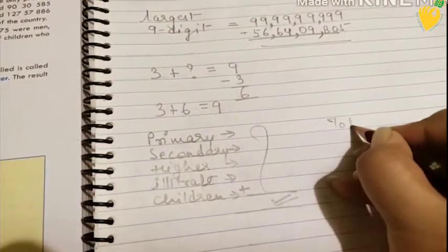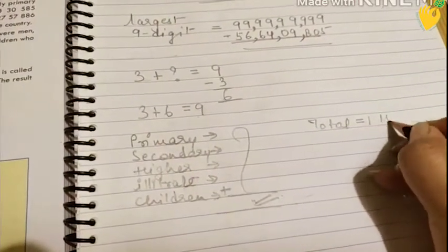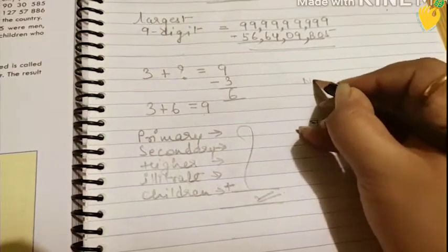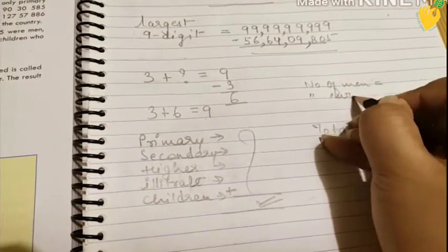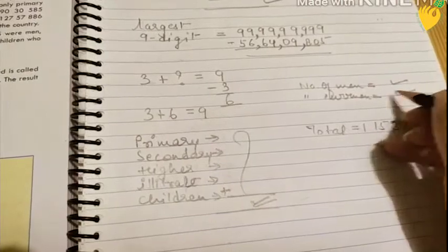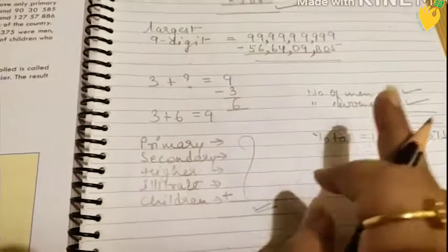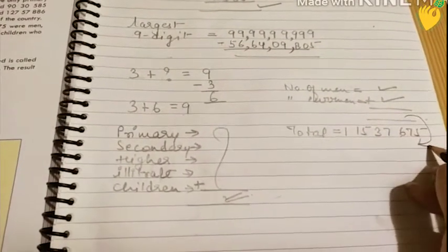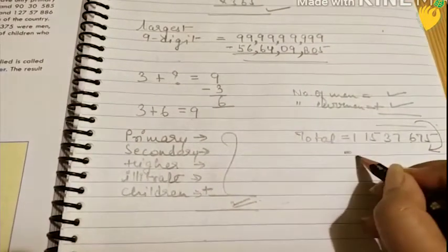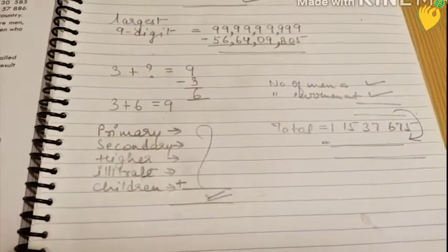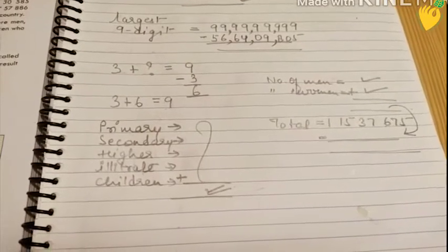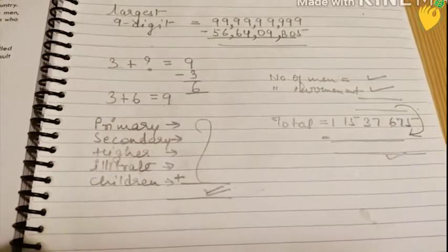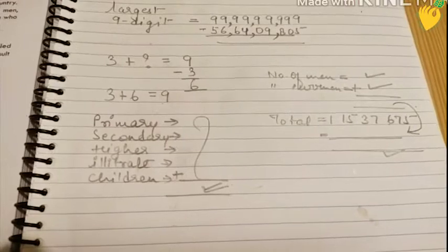Number of people visited the fair: 1 crore 15 lakh 37,675. Number of men visited the fair, number of women visited the fair. You will add both. Then the answer you get, you have to subtract it from the total number of people who visited the fair. After subtracting this, you got the answer or you got the number of children who visited the fair. Clear?